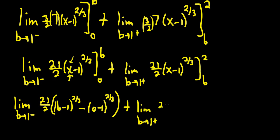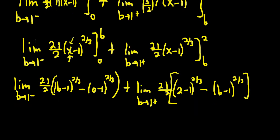b approaches 1 from the right. So 21 halves. This will be 2 minus 1 to the 2 thirds minus. I'll put a bracket here. Minus. And then b minus 1 to the 2 thirds. It's getting crazy.